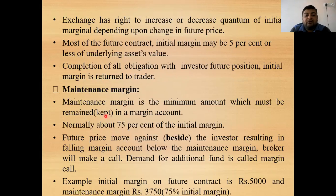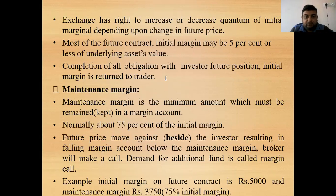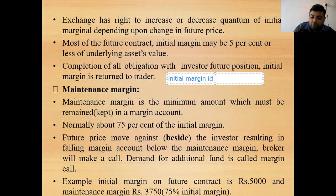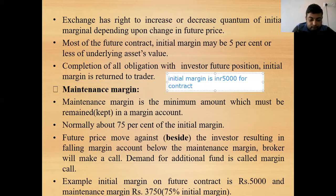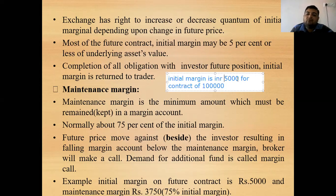The maintenance margin is the minimum amount which must be retained in the margin account at all times. For example, it is normally around 75% of the initial margin. Let's take an example: the initial margin is ₹5,000 for a contract of one lot. This initial margin has to be deposited with the exchange when entering into the contract.